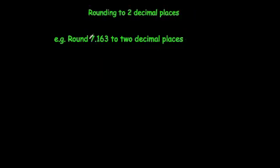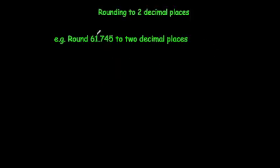Round 7.163 to two decimal places. We only want two numbers after the decimal point, so we look at the third one — it's a 3, so we round down: 7.16. Next, round 61.745 to two decimal places. We look at the third decimal place — it's a 5, so we round up: 61.75.